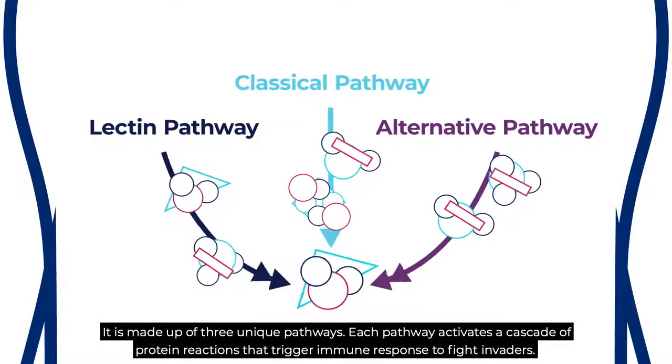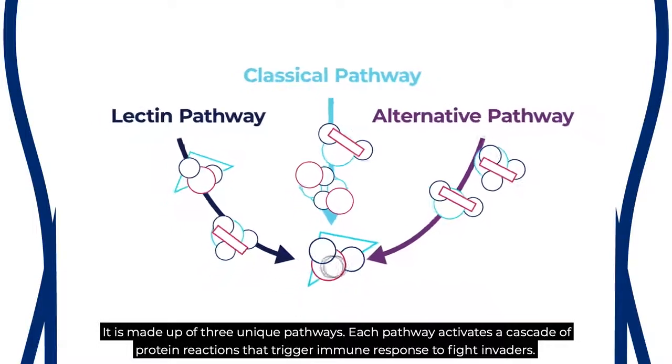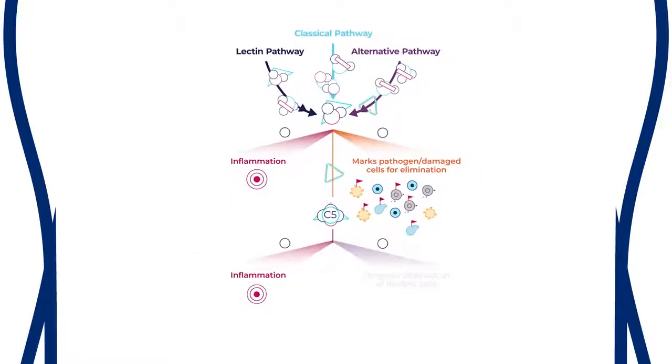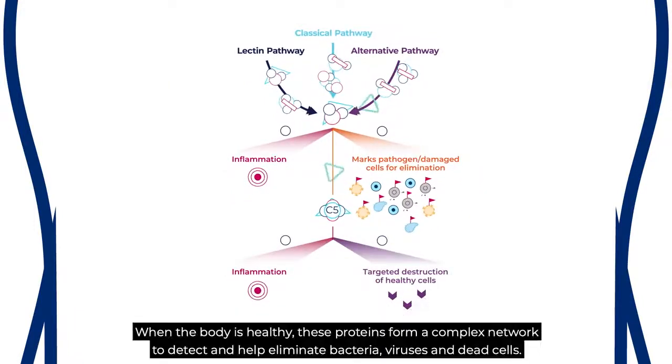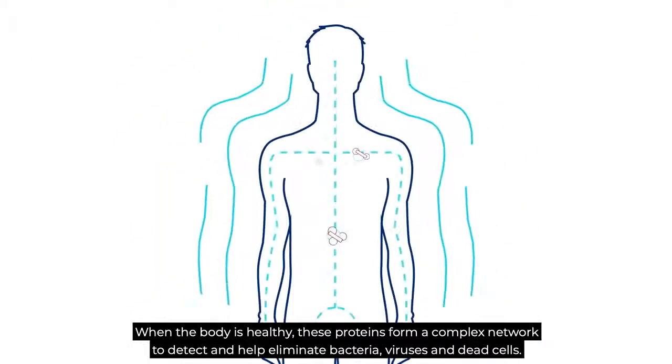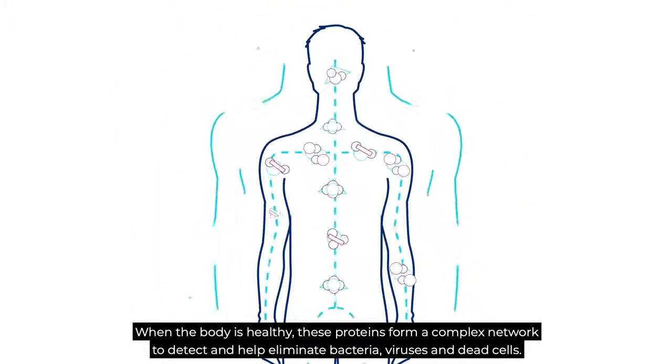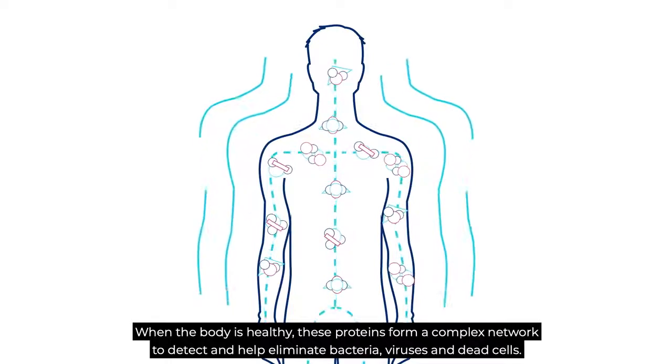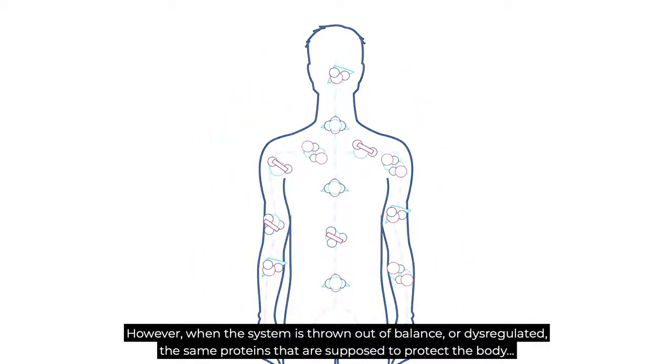When the body is healthy, these proteins form a complex network to detect and help eliminate bacteria, viruses, and dead cells. However, when the system is thrown out of balance or dysregulated, the same proteins that are supposed to protect the body can trigger a dangerous uncontrolled cascade of reactions.